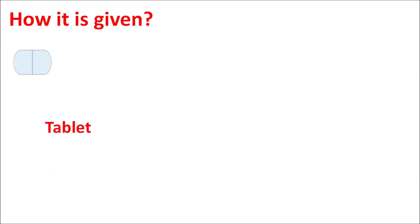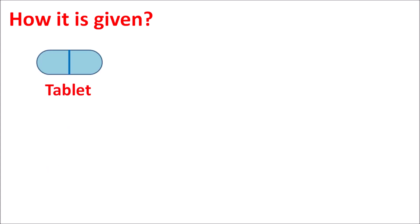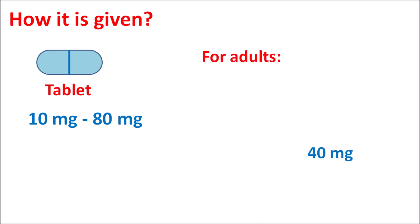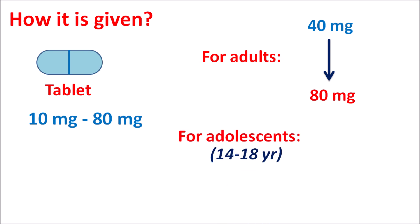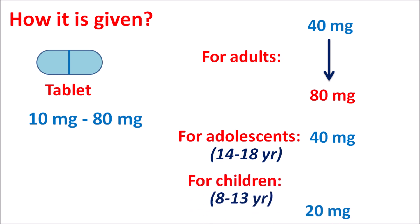Pravastatin is available as tablets in different strengths: 10 mg, 20 mg, 40 mg, and 80 mg. For adults, the initial dose is 40 mg, which can be slowly increased up to 80 mg to control LDL cholesterol. In adolescents aged 14 to 18 years, the initial dose is 40 mg and should not exceed 40 mg. For children aged 8 to 13 years, the initial dose is 20 mg, which can be increased up to 40 mg based on treatment efficacy.